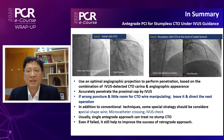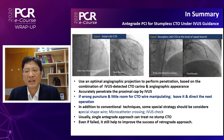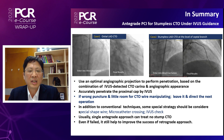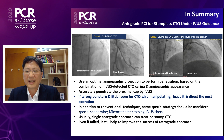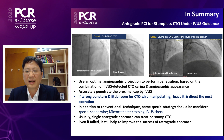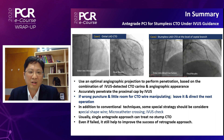In summary, we use an optimal angiogram projection to perform penetration based on the combination of IVA-detected CTO border and angiogram appearance, and we define the proximal cap by IVA. In addition to conventional techniques, some special considerations apply. Usually, a single anterograde approach can treat a non-stump CTO. Even if it fails, it still helps improve the success of the retrograde approach. Thank you.